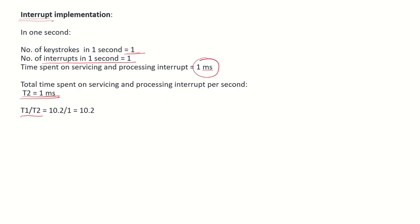Now if we compute the ratio T1 upon T2: T1 is 10.2 milliseconds and T2 is 1 millisecond. So 10.2 upon 1 gives us 10.2. This is the answer.